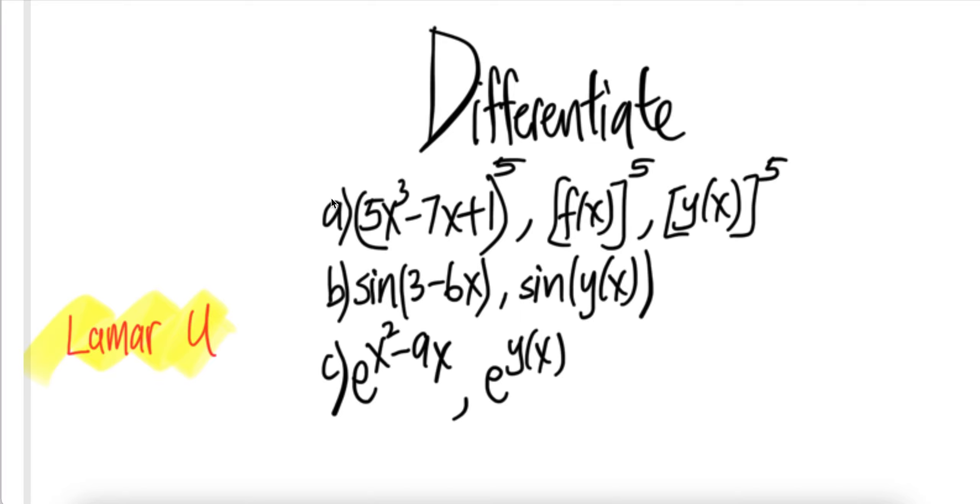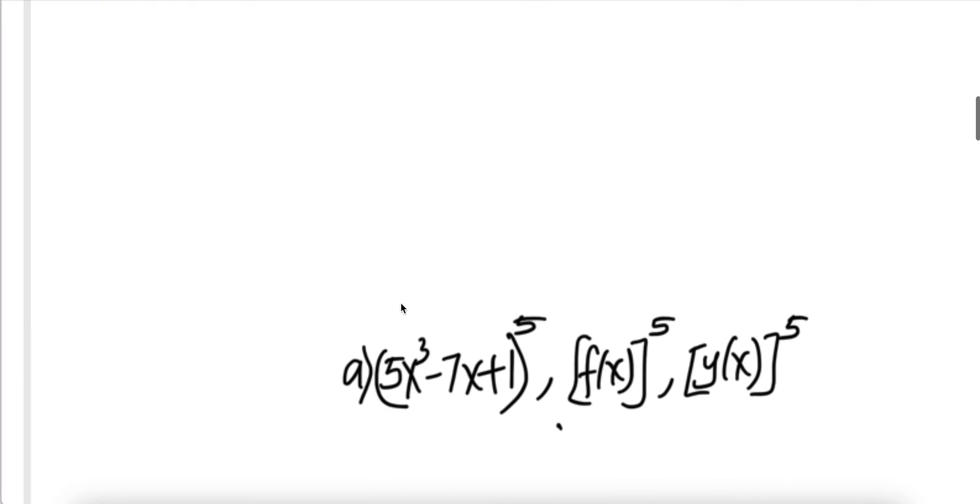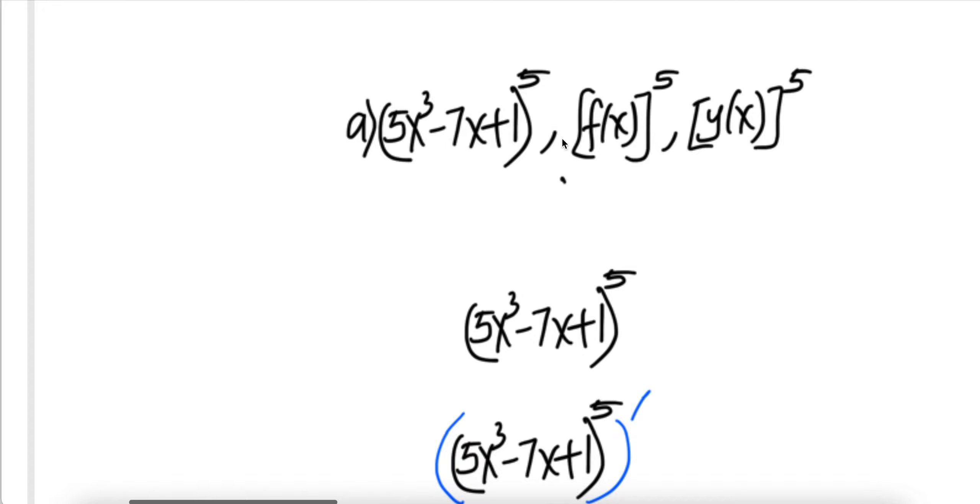Problem from Blahman, you see, differentiate ABC. Let's do part A. Part A, there are three, three of them.